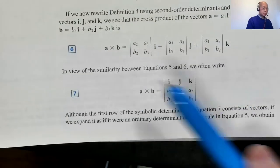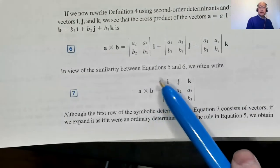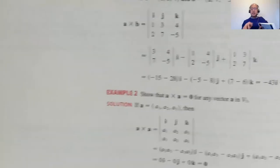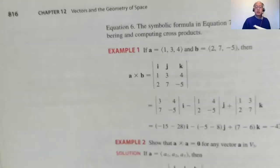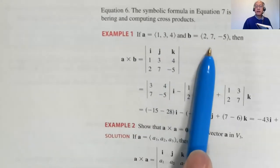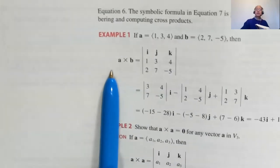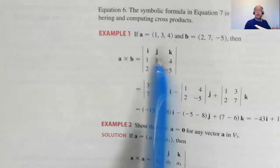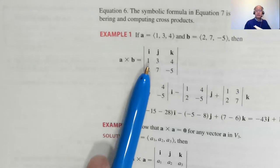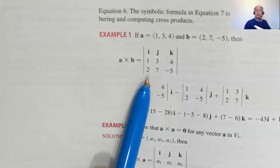With that in mind, A cross B is the determinant with i, j, k in the top row, then A1, A2, A3, then B1, B2, B3. There's an example on page 816: given two three-dimensional vectors A = (1, 3, 4) and B = (2, 7, -5), the cross product has i, j, k on top, then 1, 3, 4, then 2, 7, -5.